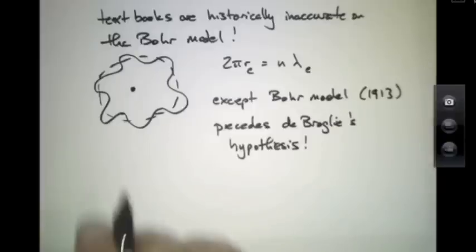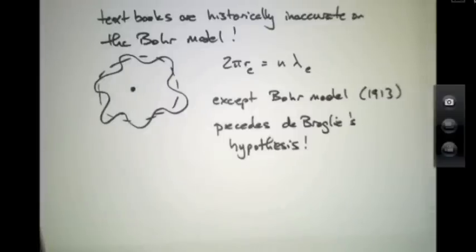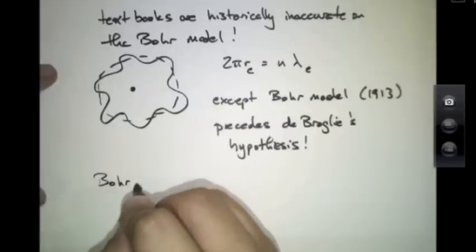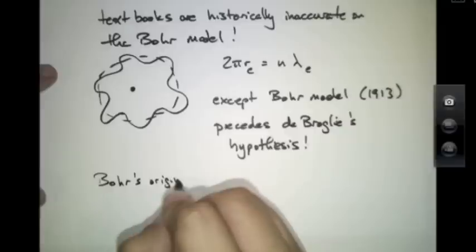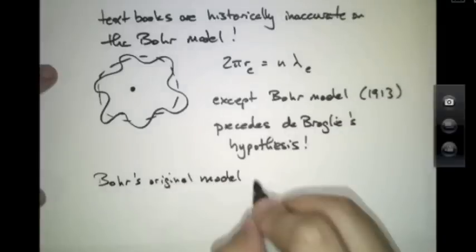So while it's true that one can derive the energy levels of the atom to agree with the Bohr model using this quantization of radii to agree with an integer of a wavelength, kind of like a standing wave around the circumference, this is not how Bohr did it. Bohr's original model was insightful for its own reasons.